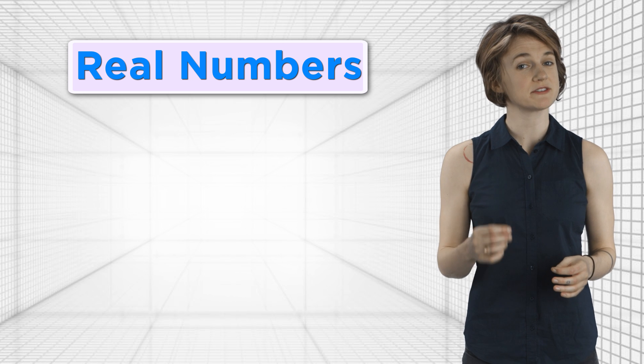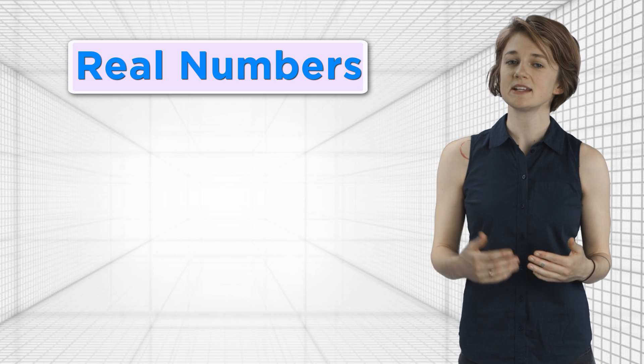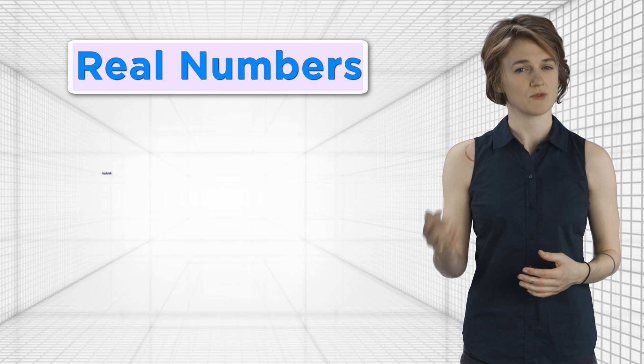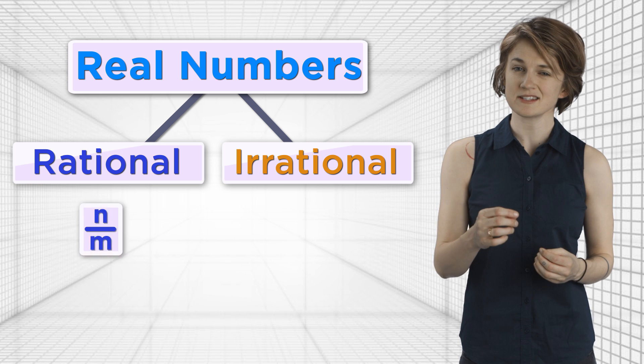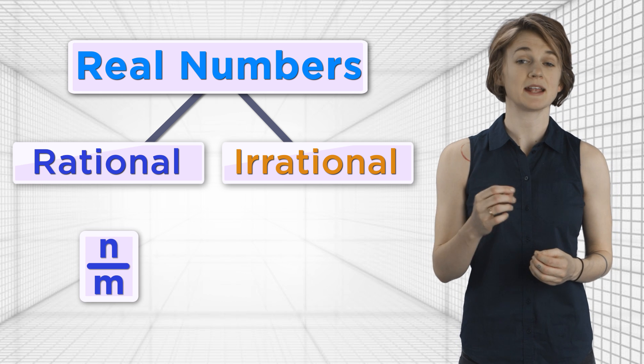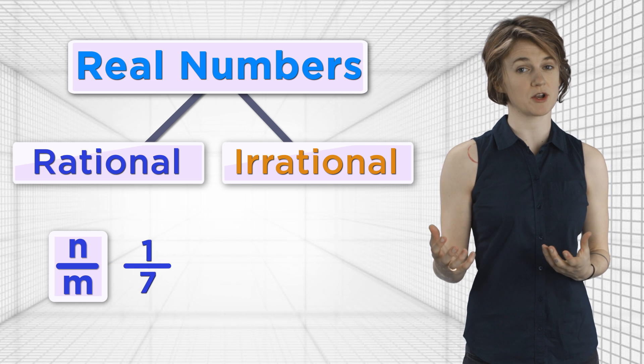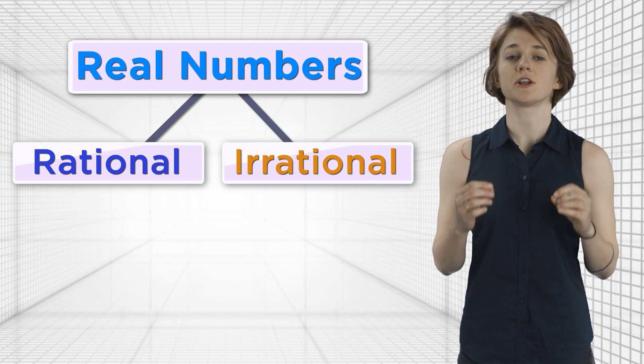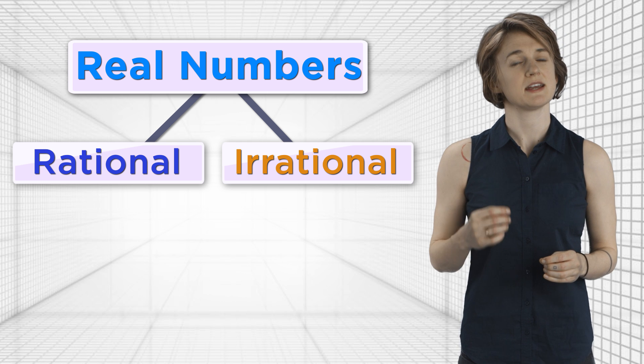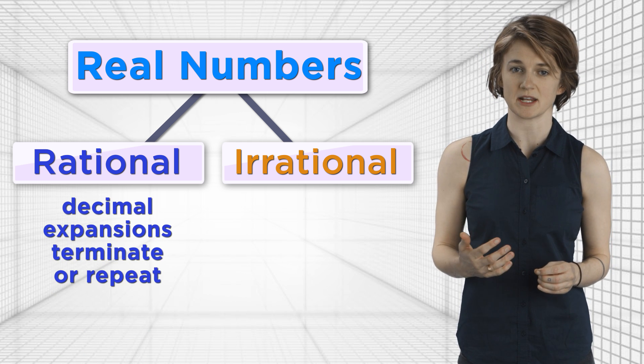All the real numbers, any number that appears on the number line, can be divided into two categories: rational and irrational. Rational numbers are those that can be written as n divided by m, where n and m are two integers, like 73 over 5, or 1 over 7, or 133 over 300.